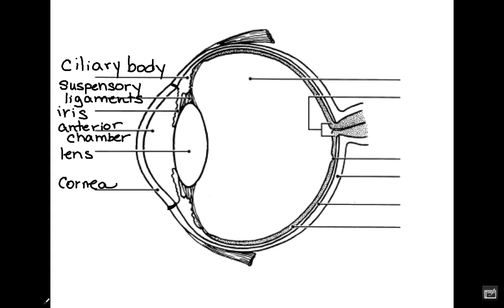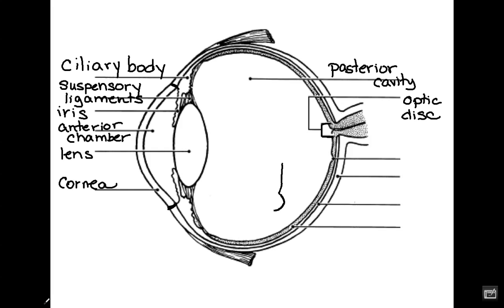Moving to the other side, the large area at the back is the posterior cavity or posterior chamber. The next area is a region called the optic disc. There is also a membrane that comes down with a small divot there — the next line tags that divot, which is called the fovea. The fovea is the center for our visual axis.